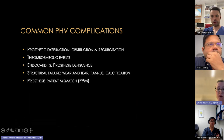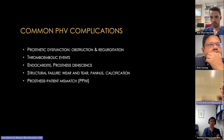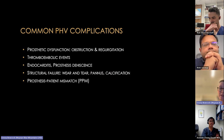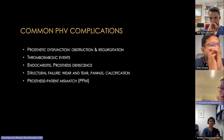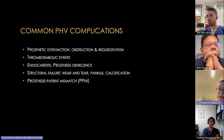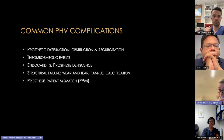Common complications with prosthetic valves in the ICU include obstruction, pathological regurgitation, thromboembolic events, endocarditis, prosthesis dehiscence (endocarditis until proven otherwise), structural failure from wear and tear, pannus ingrowth, calcification, and patient-prosthesis mismatch.